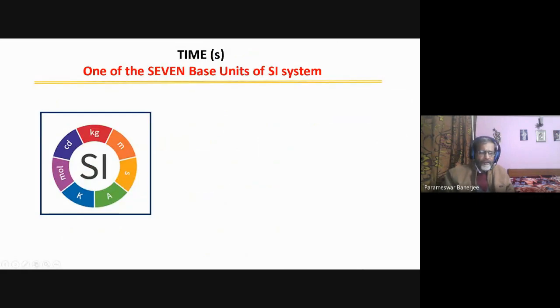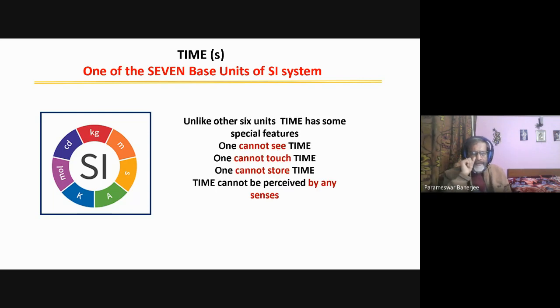Time is one of the seven base units of SI system. The other six units have special features, other than time. The time, you cannot see. Can you see a time? You cannot see. Of course, if you look at the watch, you can see the time. But time is an abstract thing. You cannot touch it. You cannot store it. You cannot perceive it by senses. So, this is a very special thing. Unlike kilogram, mass, ampere, temperature, mole, luminous intensity, it has a different special character. It has an existence. You can see it. But time is a different thing.